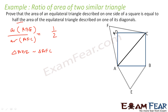Now, we know that triangle ABE is similar to triangle AFC because both are equilateral triangles. All the angles are 60 degrees. Two equilateral triangles are always similar because all angles are always 60 degrees.